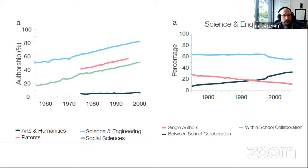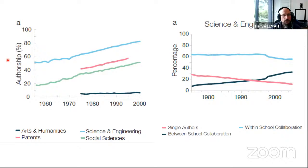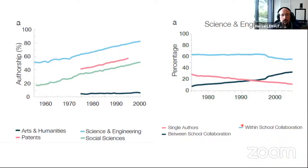You can see that as the years go on, there's an increase of people in the authorship for most fields, except perhaps arts and humanities research. Here's another way to look at it: in pink you have single-author papers, in blue you have within-school collaboration, and in black, between-school collaboration. You can see a decrease of single-author papers and an increase of between-school collaboration — meaning between universities, between cities, between countries.